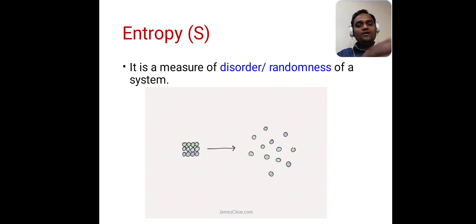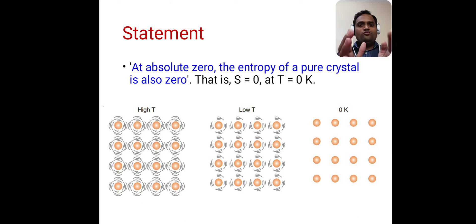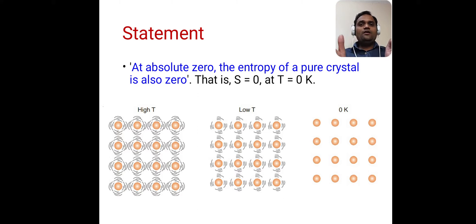This is the relation of entropy with the third law: at absolute zero, the entropy of a pure crystal is also zero. At absolute zero, the system becomes perfect — there is no randomness in the system, so the entropy becomes zero.